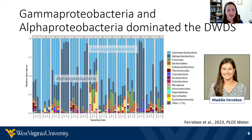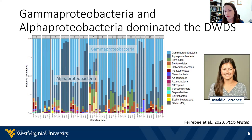Another student, Maddie, followed up on this to ask what all these bacteria out in the distribution system actually are. She used DNA sequencing of these samples to profile all the different microbes present, and you can see there's remarkable diversity in terms of what organisms are present. The good news is that the vast majority of these are not known to be harmful in any way. Gamma proteobacteria and alpha proteobacteria were most common, which is quite consistent with other systems from around the country.